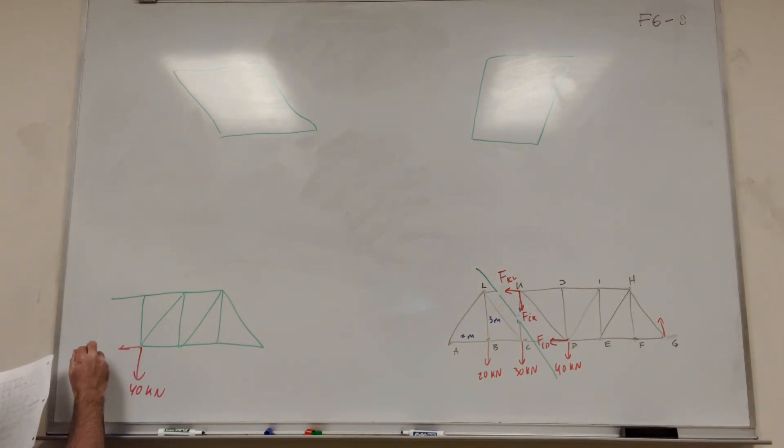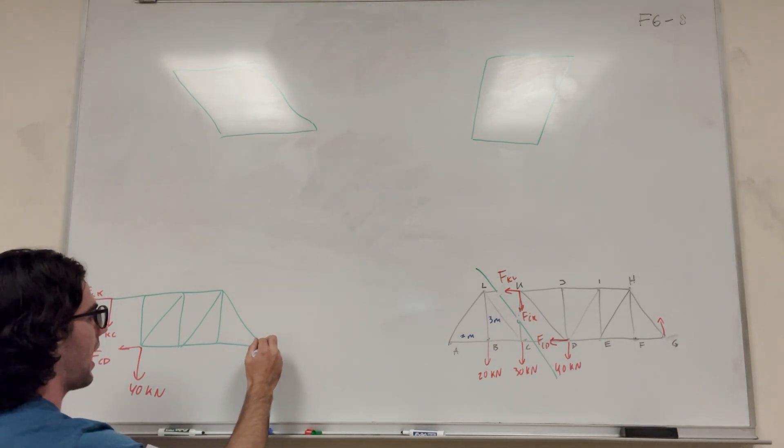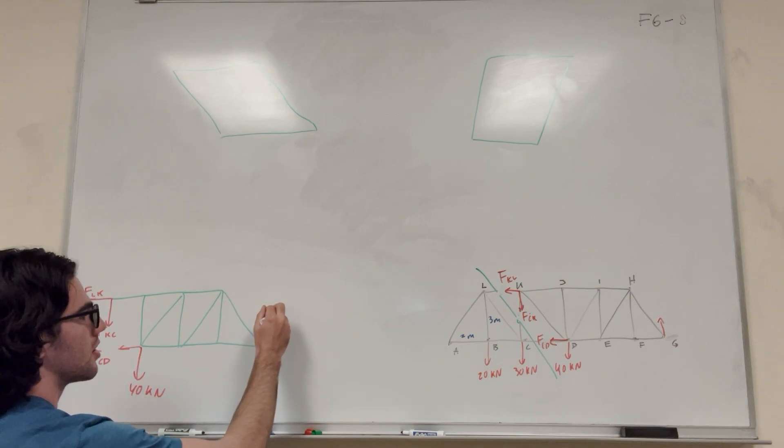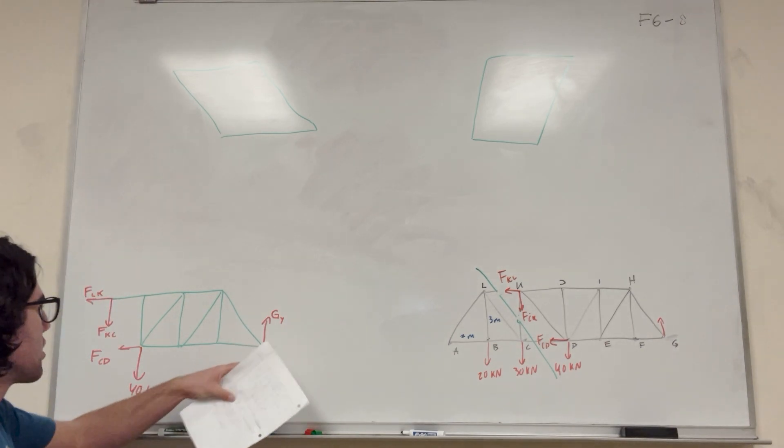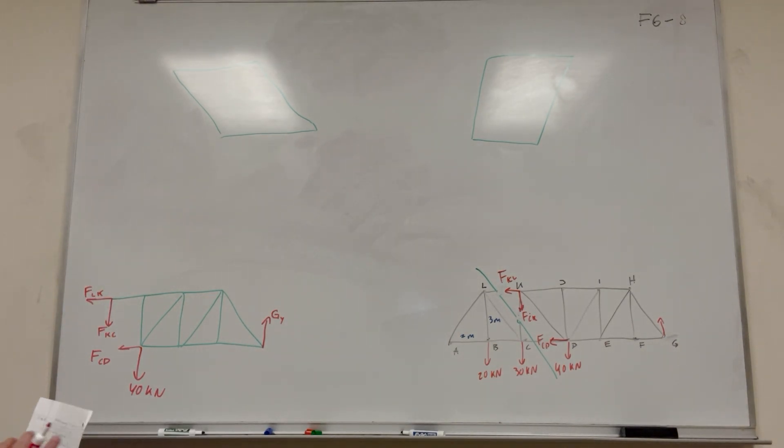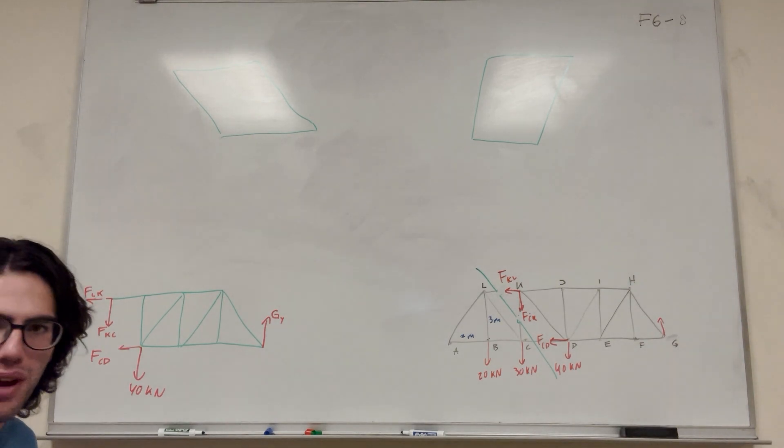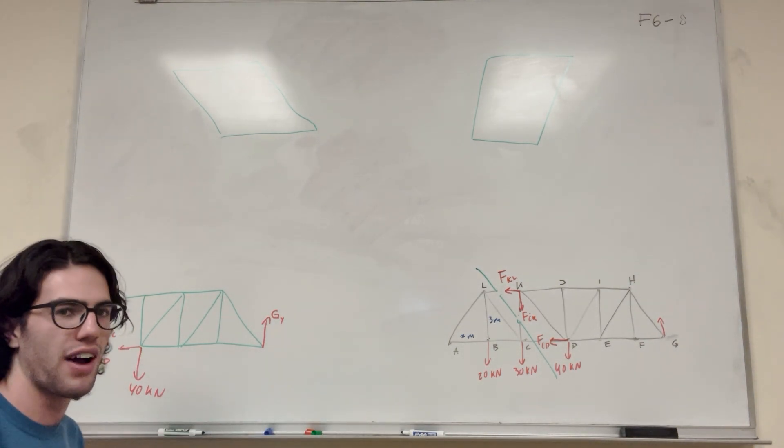So of course we know that this 40 kN force is still here. And then we said that this is FCD. Then we have this here pushes down. This is FKC, or CK, whatever. And this is FLK, right? And then we know that G acts upward. So we can just label this G of Y because G is a roller, it can only act upward. So that's how we know that this is G of Y. And then literally what we have here is this way, way, way simpler equation. We have maybe one, two, three, four, five forces.